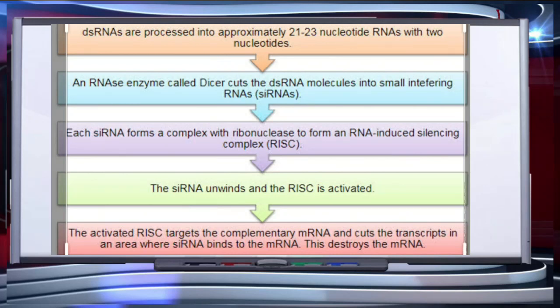Agrobacterium vectors are used to introduce nematode specific genes into the host plant. It produces both sense and antisense RNA in the host cells. These two RNAs are complementary to each other and form a double stranded RNA, or dsRNA, that initiates RNA interference and hence silences the specific mRNA of the nematode.